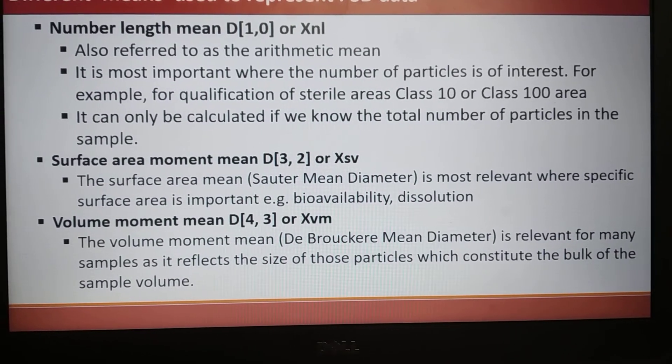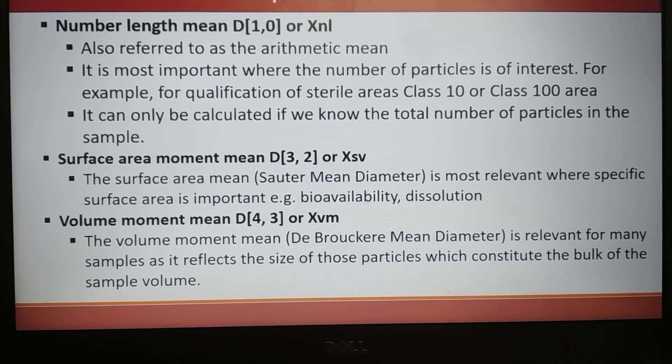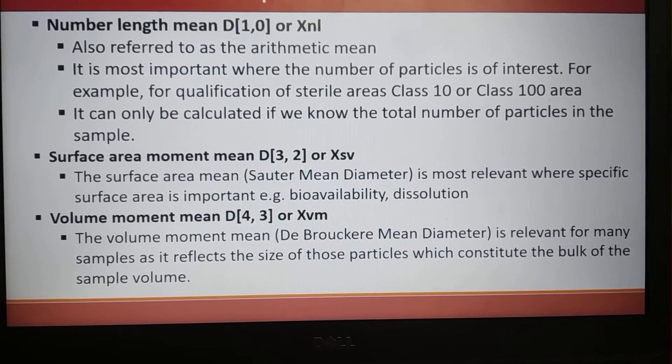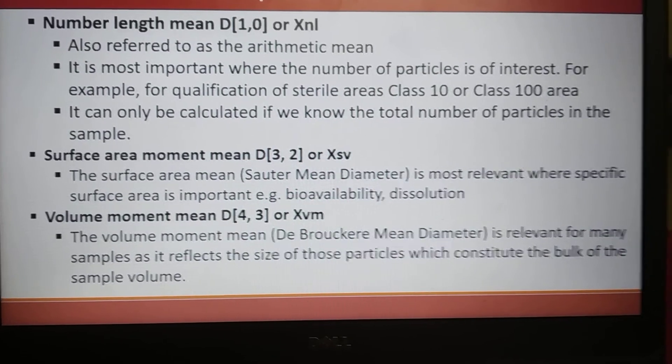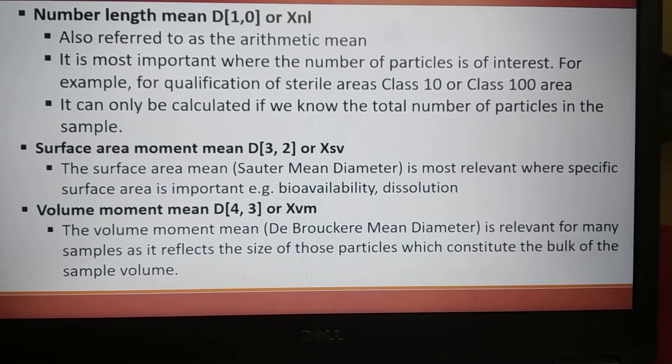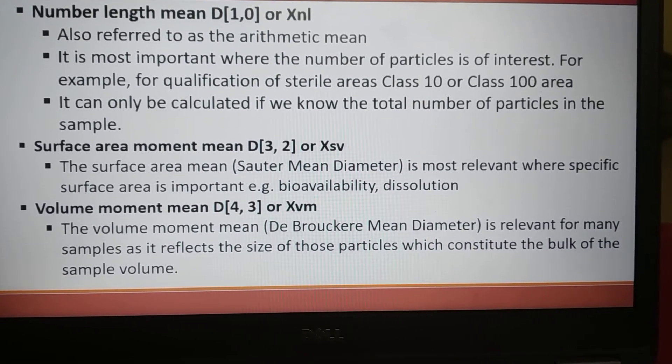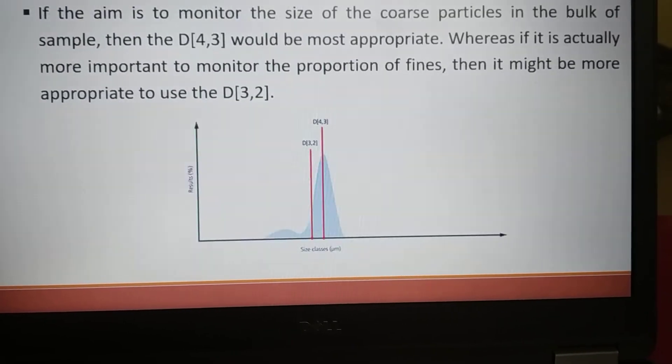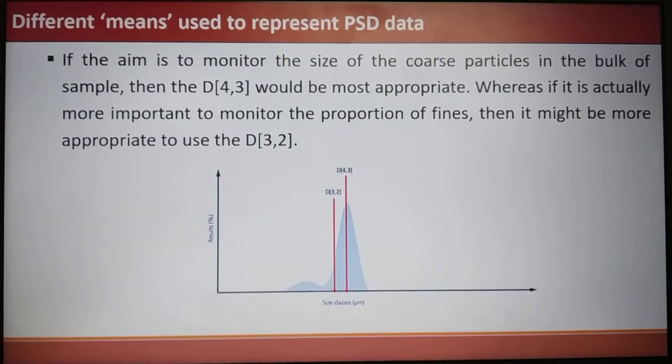The volume moment mean D[4,3] or Xvm, the volume moment mean—that is De Brouckere mean diameter—is relevant for many samples as it reflects the size of those particles which constitute the bulk of the sample volume. As the name indicates, volume moment mean measures the sphere of equivalent volume.